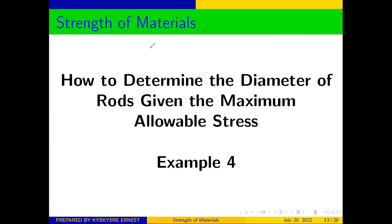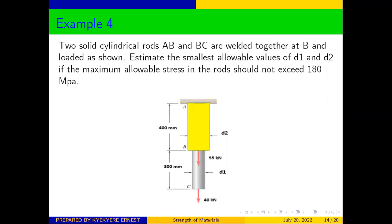Let us move quickly to our question. Two cylindrical rods, AB and BC, are welded together at D and loaded as shown. Estimate the smallest allowable values of diameter D1 and diameter D2 if the maximum allowable stress in the rod should not exceed 180 megapascal. We are allowed to estimate what should be the smallest diameter which can be able to carry such amount of stress.